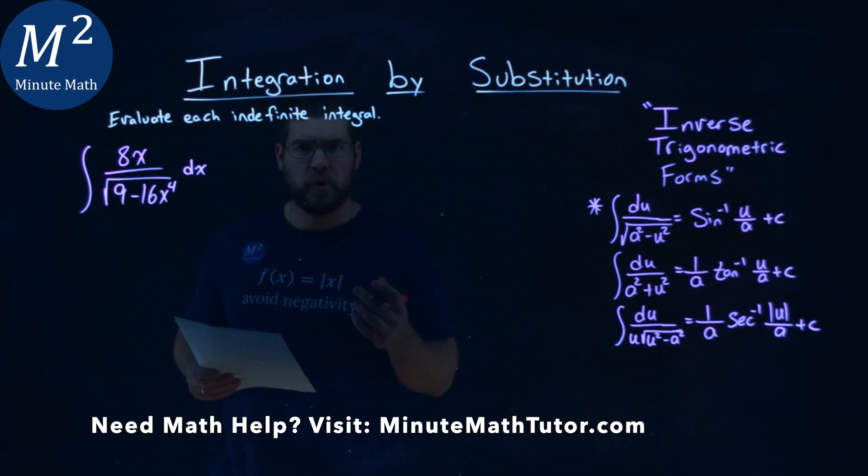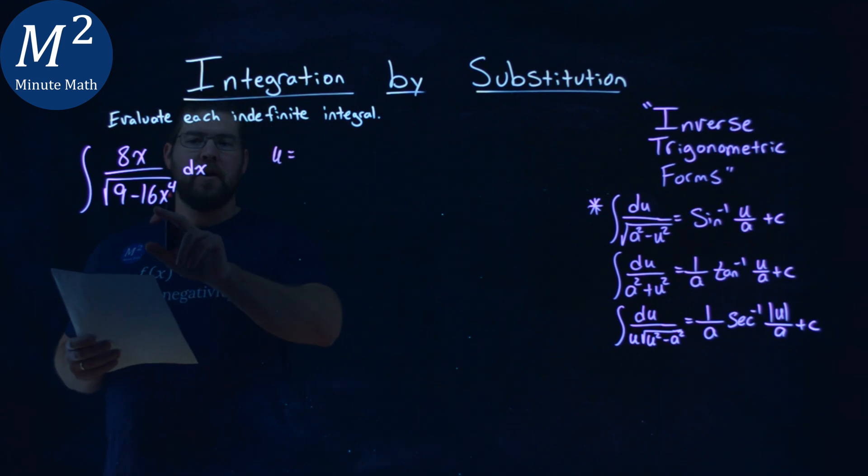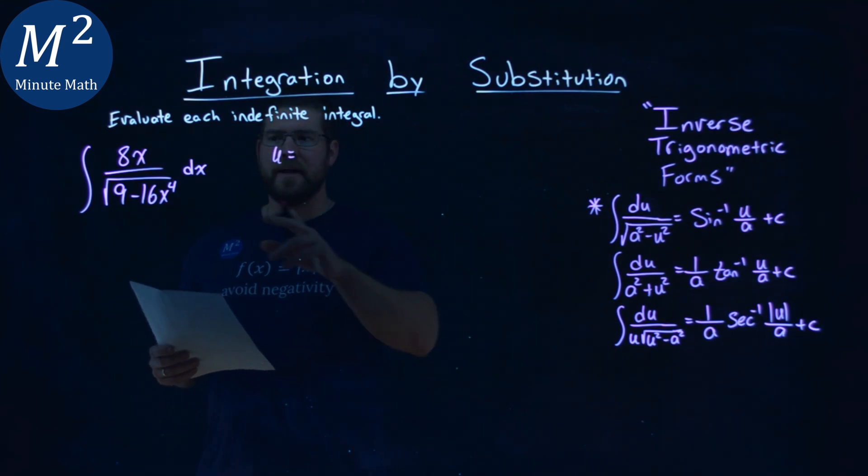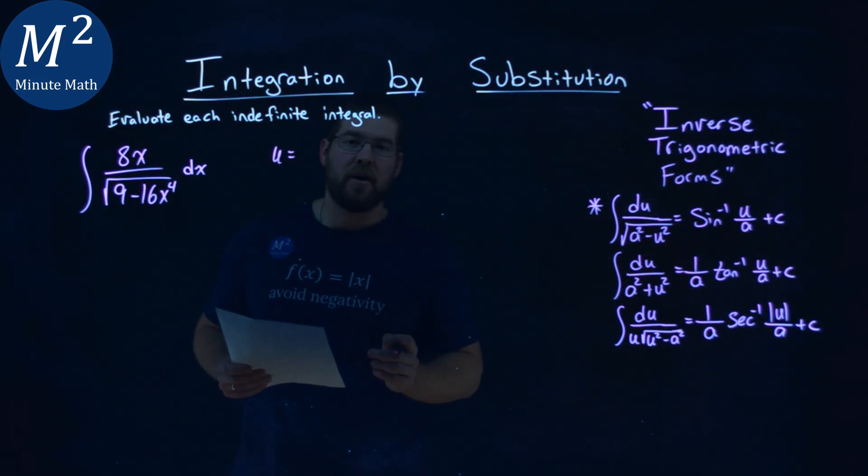I first want to find a u value. I'm actually going to use the square root of 16x to the 4th power. I'm thinking, what squared gets me that, seeing that it lines up pretty close with my arc sine form.